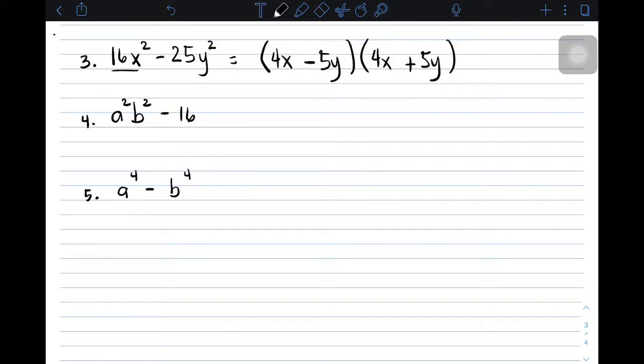We have here number 4, and nagsama naman yung dalawang variables. So, set up tayo ng dalawang parenthesis. Don't worry. This term is a perfect square. The square root of a squared and b squared is ab. So, ab, yan yung first term natin. Minus, plus, or positive, negative, 4. That's it. That is the factor.